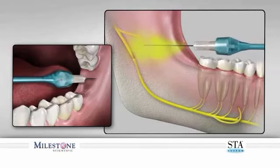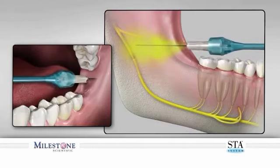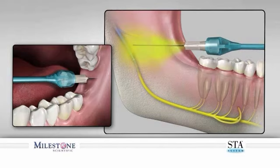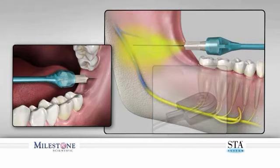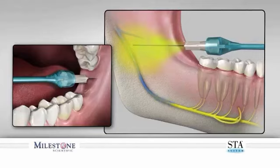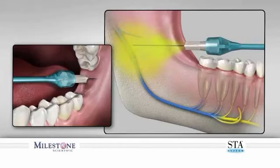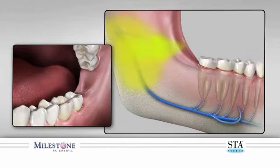Advance the needle until bone is contacted. The final target is the medial aspect of the ramus within the infratemporal fossa. Once you are at your target site, perform an aspiration by depressing and releasing the foot control pedal until a negative aspiration is obtained. Continue the injection by depressing the foot control pedal. It is recommended that the first quarter of the cartridge be dispensed using the controlled flow rate before transitioning to the rapid flow rate.